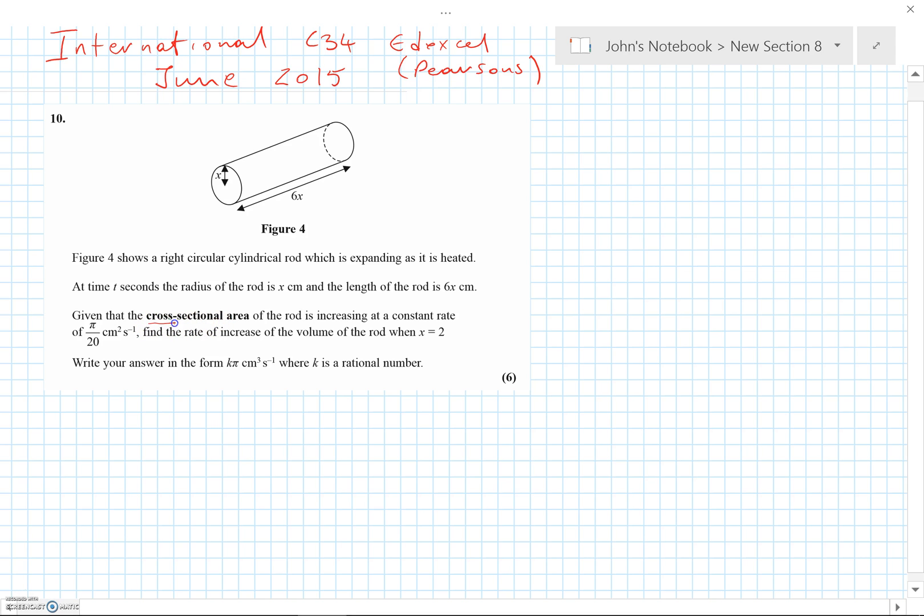We've been asked for the cross-sectional area is increasing. We've been told that it's increasing at a constant rate. So let's write that down: dA/dt equals π over 20.